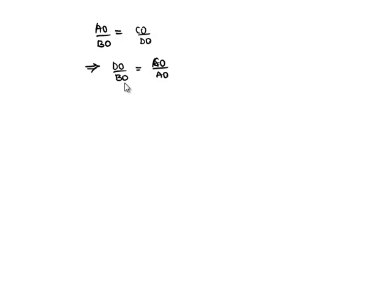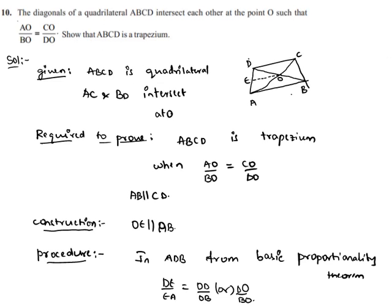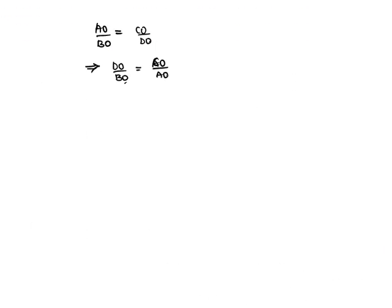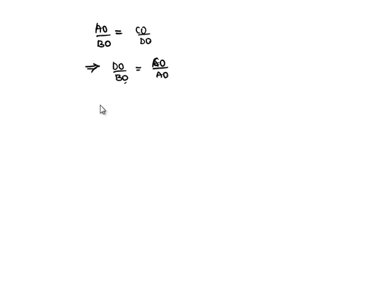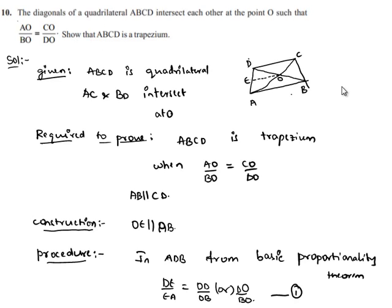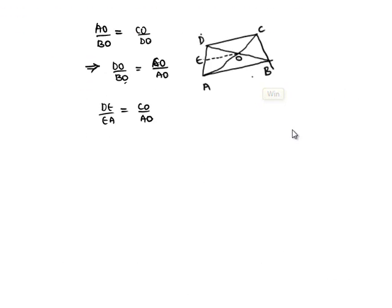Now instead of DO by BO in equation 1, let us substitute the value CO by AO. Then equation 1 becomes DE by EA is equal to CO by AO.